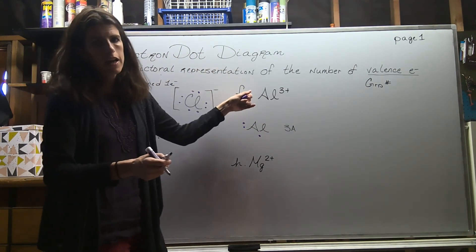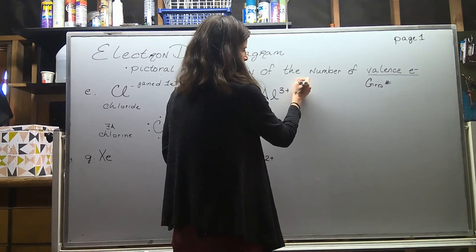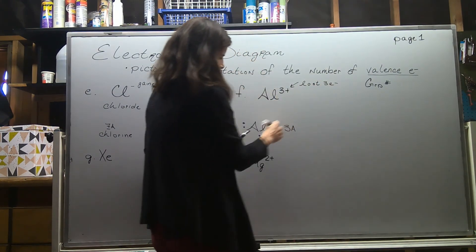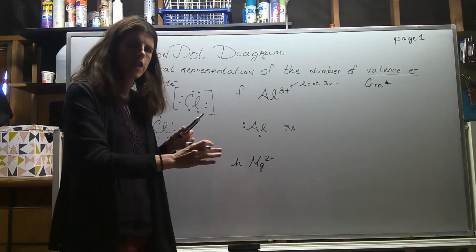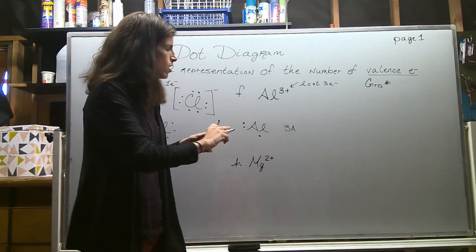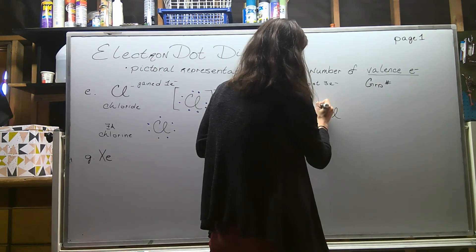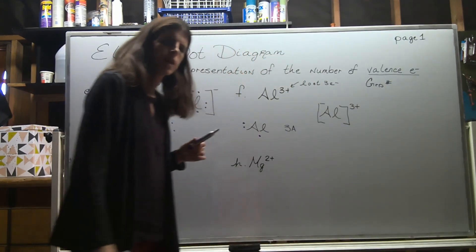However, the cation of aluminum has lost - remember, it's positive to lose - so it lost three electrons. Basically, these three dots that we drew, these three electrons, aren't there anymore in the cation. So we can just represent this as Al and we'll do our square brackets and we'll do 3+ on the outside.